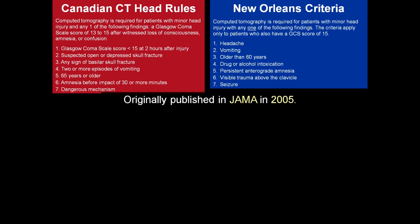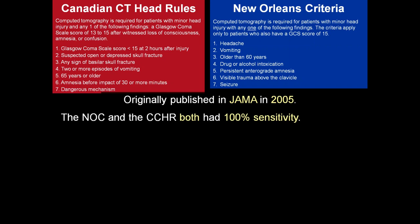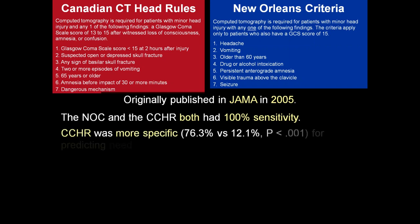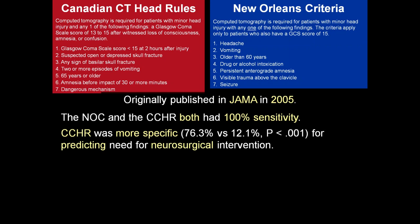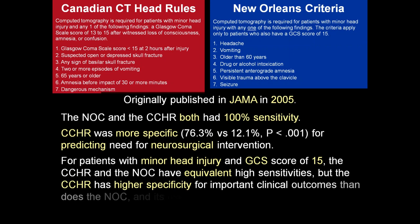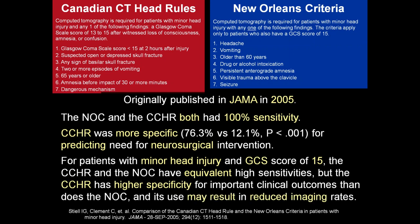A comparison study from JAMA 2005 — authored by the author of the Canadian CT head rule — found that both the New Orleans criteria and the Canadian CT head rule have 100% sensitivity. However, the Canadian CT head rule was more specific: 76% versus only 12% for the New Orleans criteria. The Canadian CT head rule also better predicts the need for neurosurgical interventions. For patients with a GCS of 15, both rules have equivalently high sensitivity, but the Canadian CT head rule has higher specificity, meaning fewer CT scans are needed.